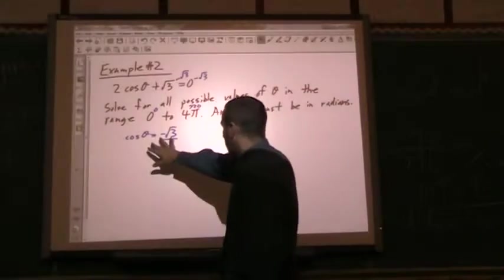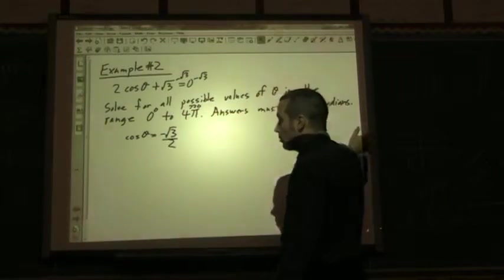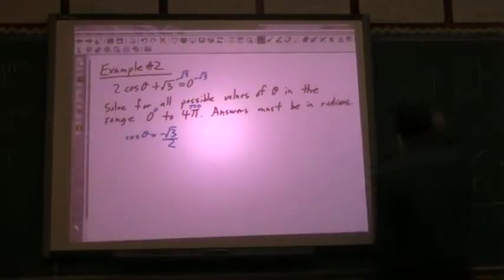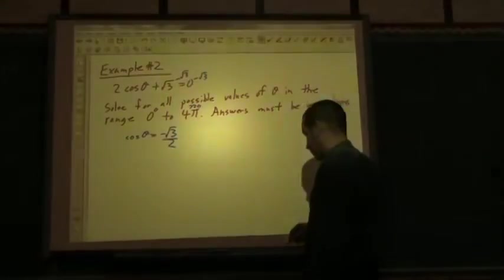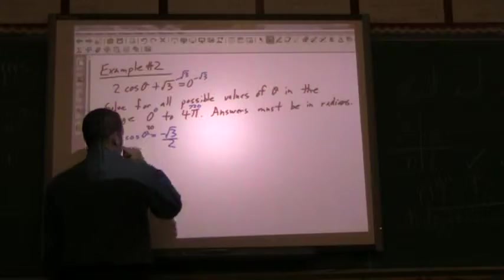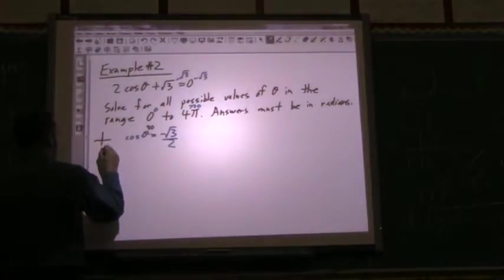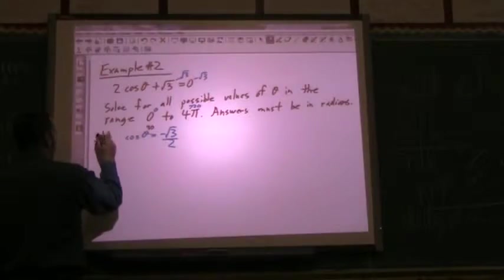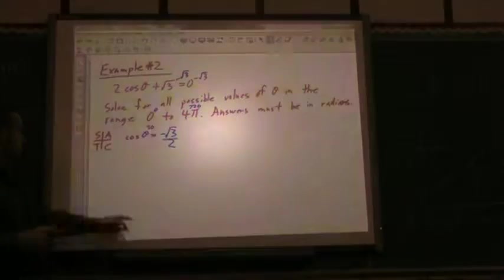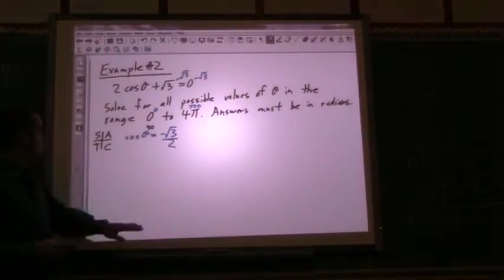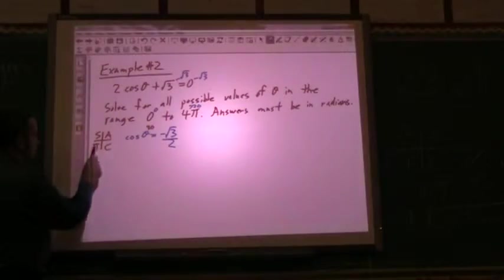So, again, I check my special angles and say what angle, when I take the cos of it, gives me root 3 over 2, 30 degrees. So I'm just going to write that above it. So then looking at my CAST rule, the ratio is negative, so I want the two quadrants where cos is negative. And that'll have to be the second and the third.